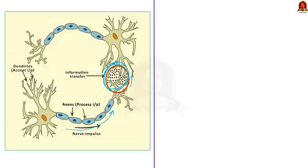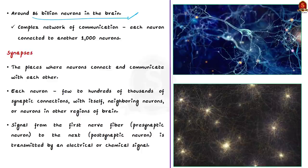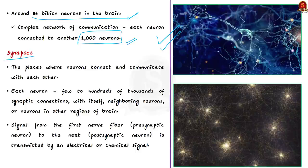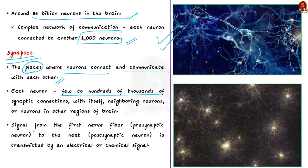There are around 86 billion neurons in the brain. A developing fetus must create around 250,000 neurons per minute to reach this number. Each neuron is connected to another thousand neurons, creating an incredibly complex network of communication. Synapses are the places where neurons connect and communicate with each other. Each neuron has anywhere between a few to hundreds of thousands of synaptic connections, which can be within itself, with neighboring neurons, or with neurons in other regions of the brain.